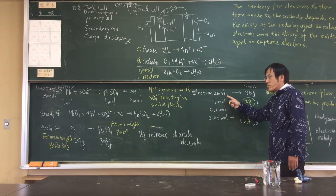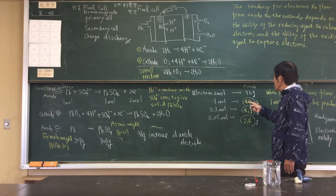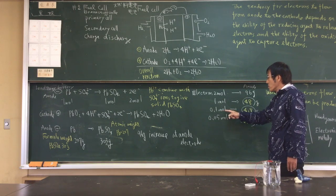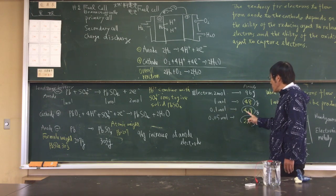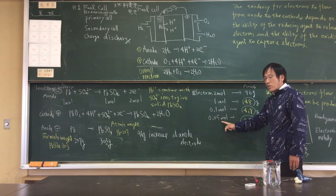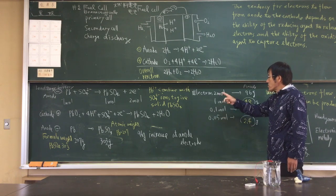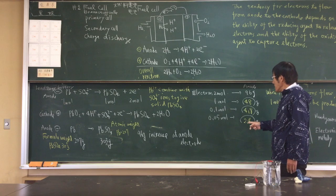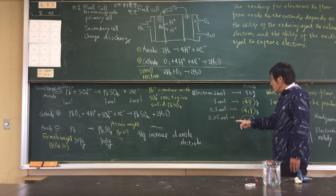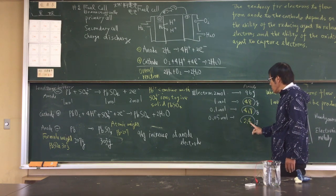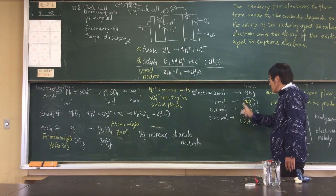If 1 molar electron flows, 48 grams. 0.1 molar: 4.8 grams. 0.05 molar electron flow at the anode: 2.4 grams increase.